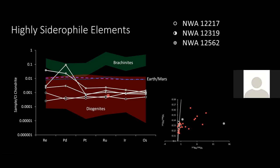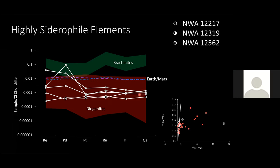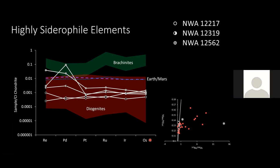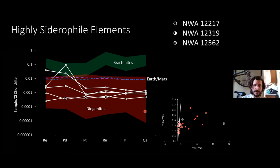Carl asks Zoltan to clarify what the pattern would look like due to core formation alone. The discussion turns to whether the arrangement goes from less to more siderophile, which might cause a downward slope. The alternative hypothesis is raised that Earth and Mars sit higher because of high-pressure core formation — especially Earth. High-pressure metal-silicate partitioning can keep more siderophile elements like nickel and cobalt in the mantle.